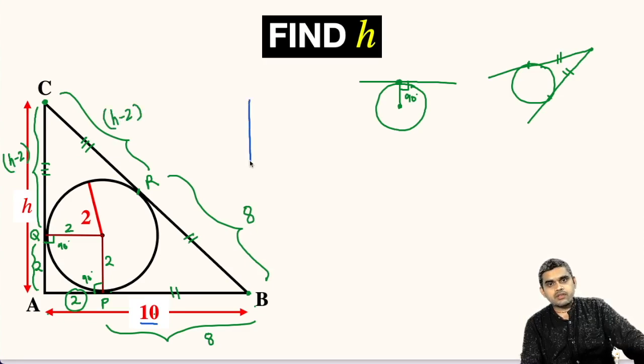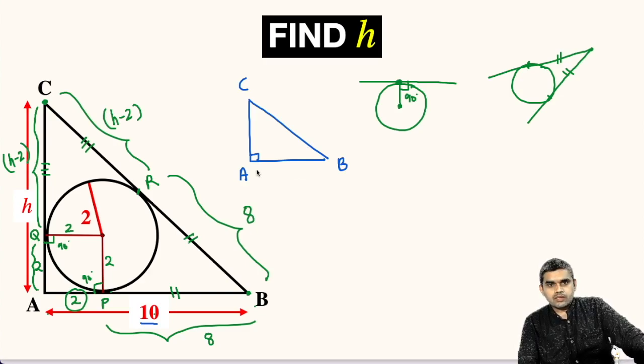Now, let us focus on this right triangle ABC once again. This point is C, this is A, this point is B, and at A this is 90 degrees. AB length is given to us as 10 units.